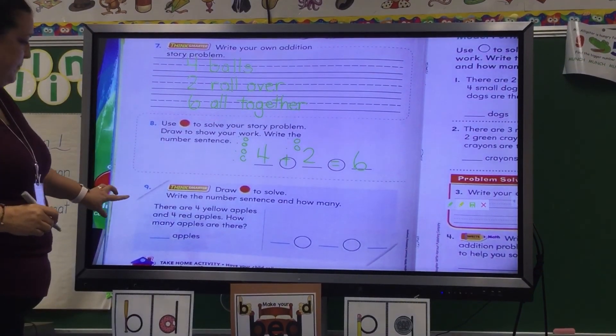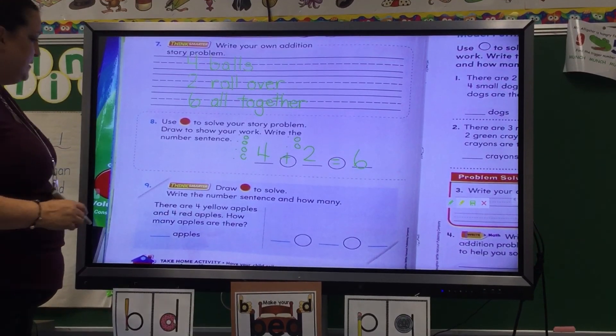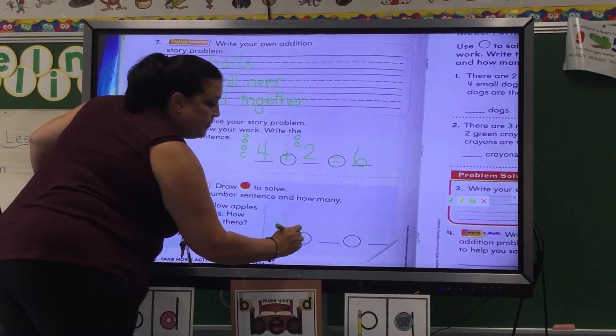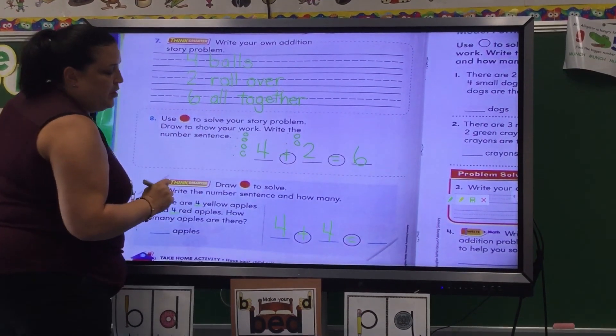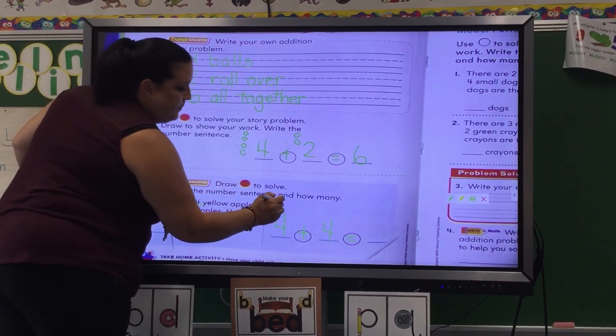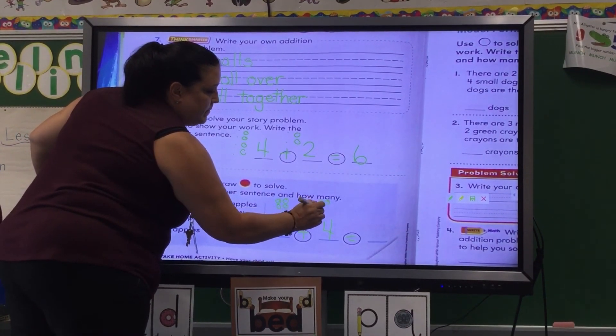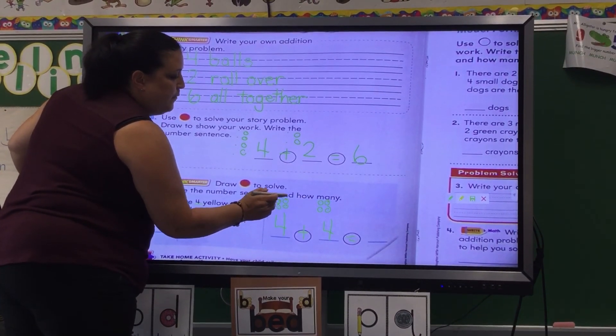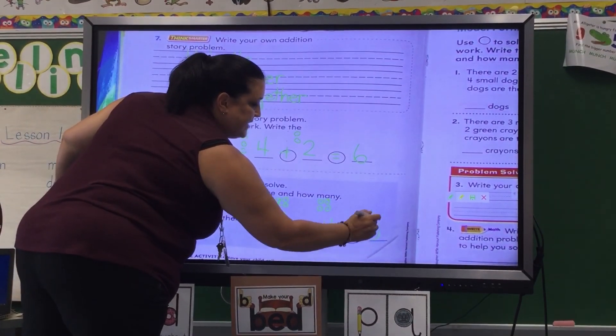At the bottom, it's another Think Smarter. There are four yellow apples and four red apples. How many apples are there? And that's called a double. When the two numbers you're adding together are the same number, that's called a double. So four plus four. Let's count them. Ready? One, two, three, four, five, six, seven, eight.